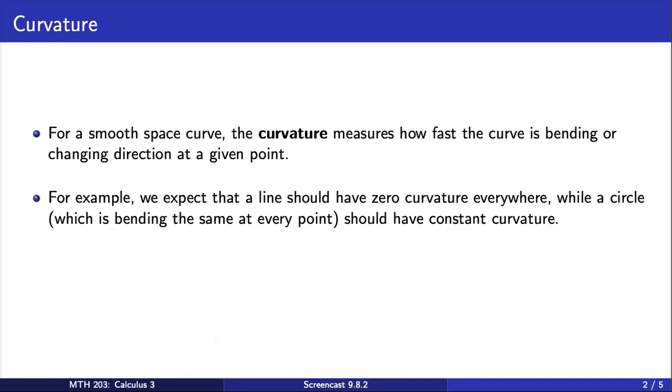For example, we expect that a line should have zero curvature everywhere, while a circle, which is bending the same at every point, should have constant curvature.